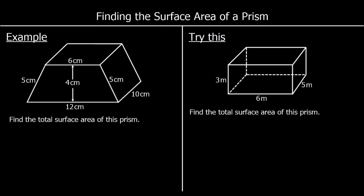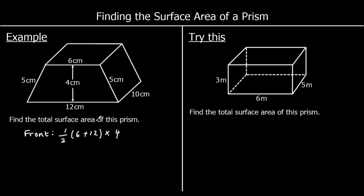Finding the surface area of a prism: to find the total surface area we find the area of every surface and add them all together. For this first shape we've got a trapezium on the front, an identical trapezium on the back, and then four rectangles for the top, the bottom, and the two sides. The area of a trapezium is half the sum of the parallel sides, so half of 6 plus 12 times the distance between them, which is 4. That gives us 36 centimeters squared. The back is the same as the front, also 36 centimeters squared.